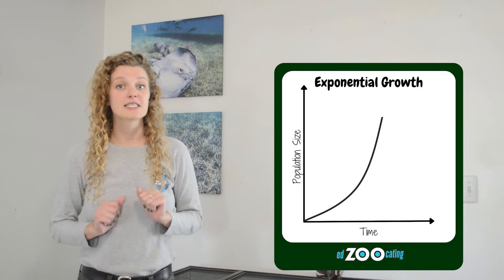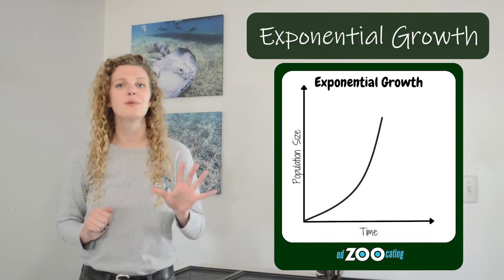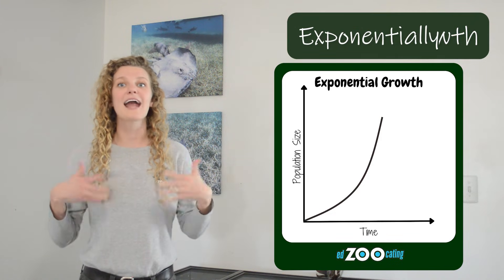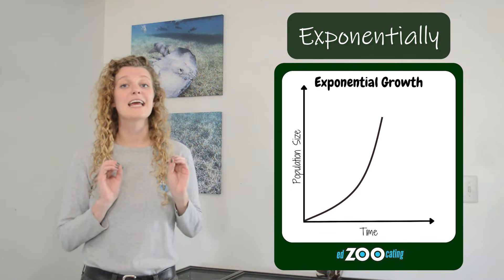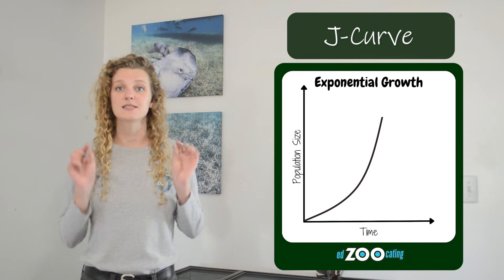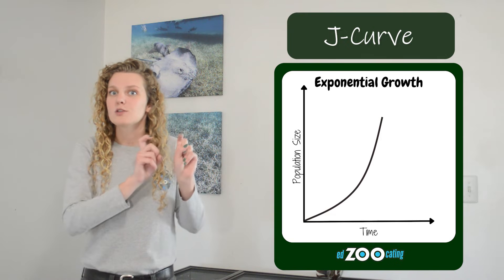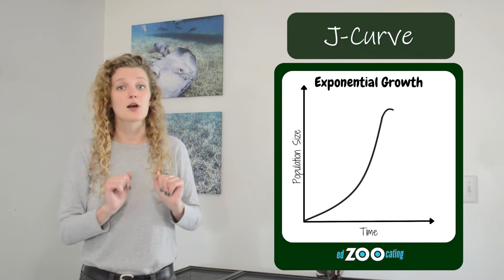Scientists simplify our understanding of carrying capacities and limiting factors when we graph an organism's population size. We're going to look at two different types of graphs. The first graph pretends that an organism's population has no limiting factors — the population is going to grow and grow seemingly forever. We call that exponential growth, and when we graph it, it looks like a J-curve. Now, this doesn't really happen. Remember, every organism in every ecosystem has a carrying capacity, so no organism's population size can grow forever. Eventually it's going to exceed its carrying capacity and we're going to see that population size starting to fall a little bit.